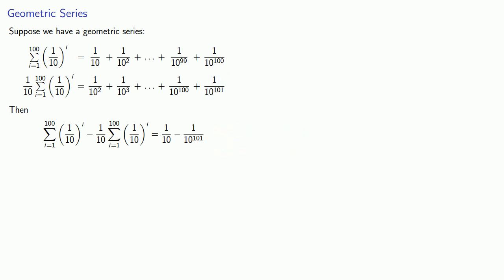And though I really detest bumper sticker mathematics, there is one phrase that's useful. If in doubt, factor out. We see that both of the terms on the left hand side have this factor of the sum from 1 to 100 of 1 tenths of the i, so let's remove that as a common factor, leaving us with. And that allows us to solve for the sum of the series.